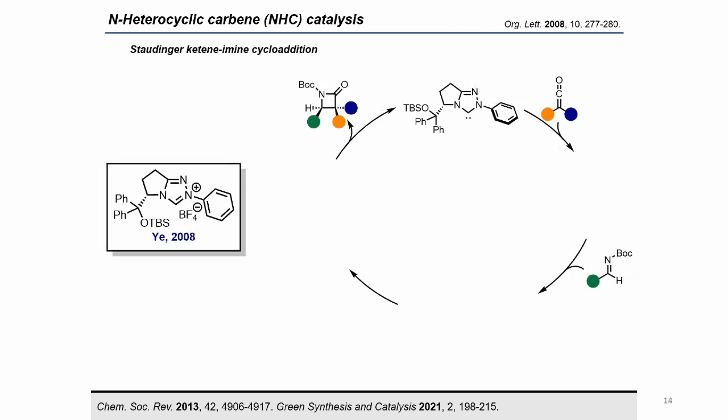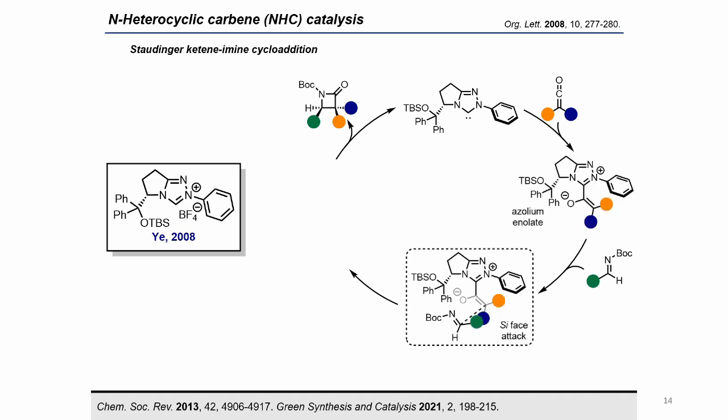Another method to access the azolium enolate consists of the addition of NHCs to ketenes. In 2008, Yee reported the enantioselective Staudinger cycloaddition. Once the azolium enolate is formed, the enantioselective addition to the imine is followed by the intramolecular addition of the nitrogen to the acyl-azolium ion, releasing the chiral beta-lactam product and regenerating the catalyst.